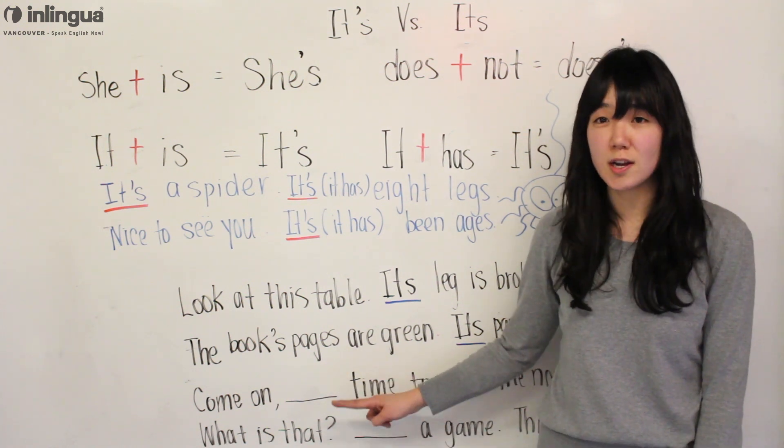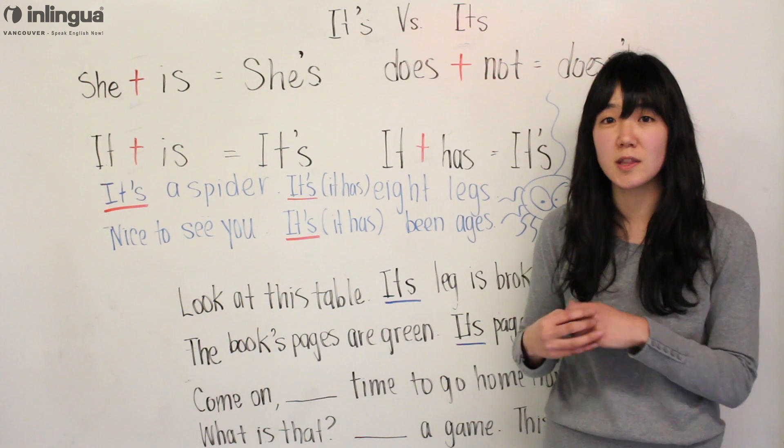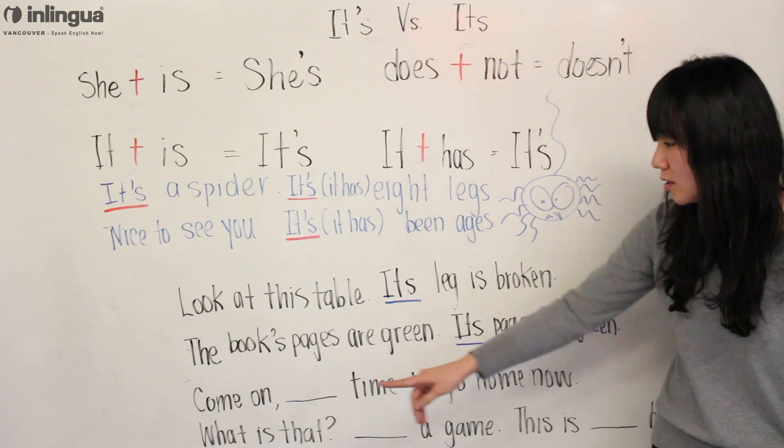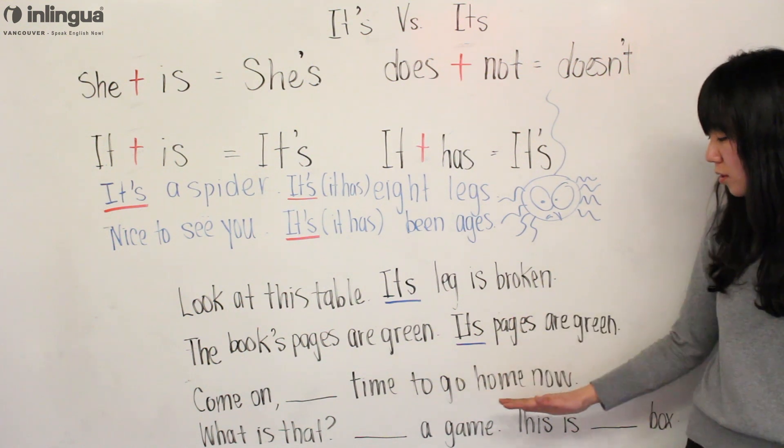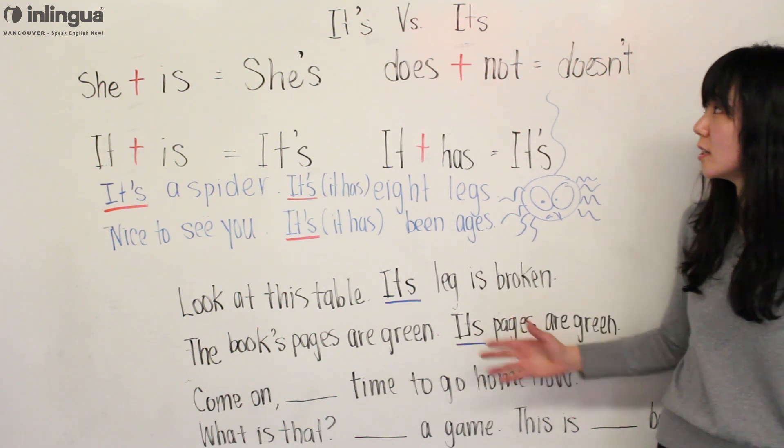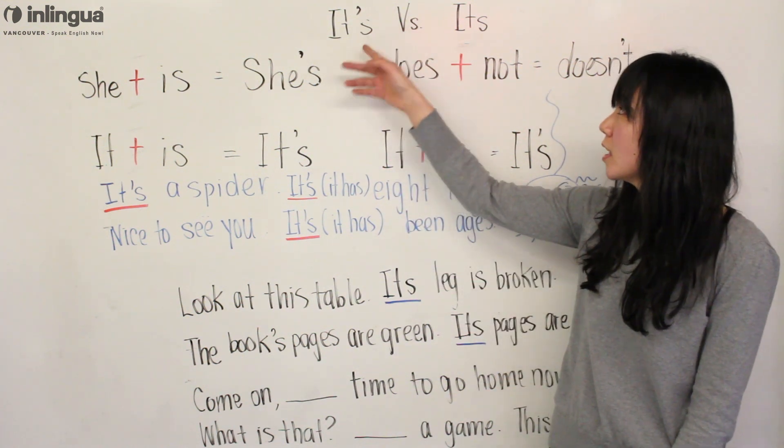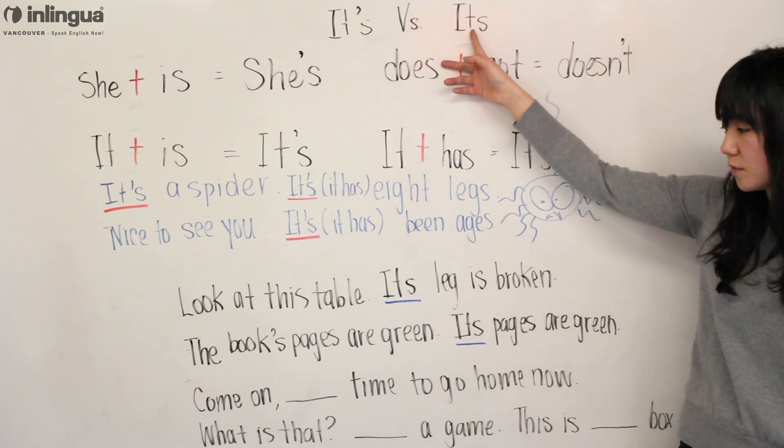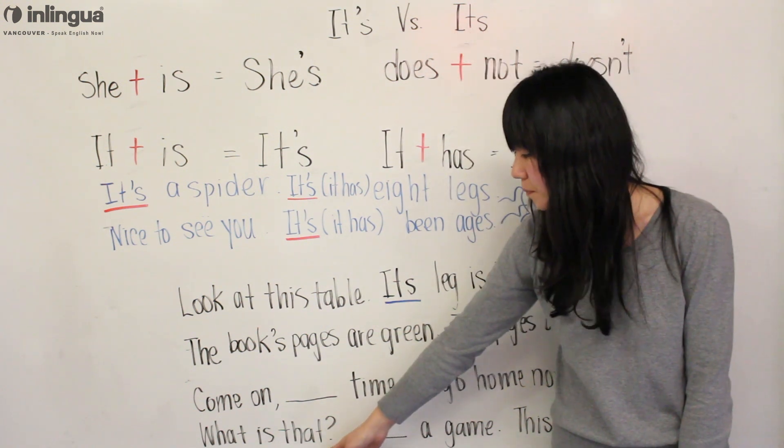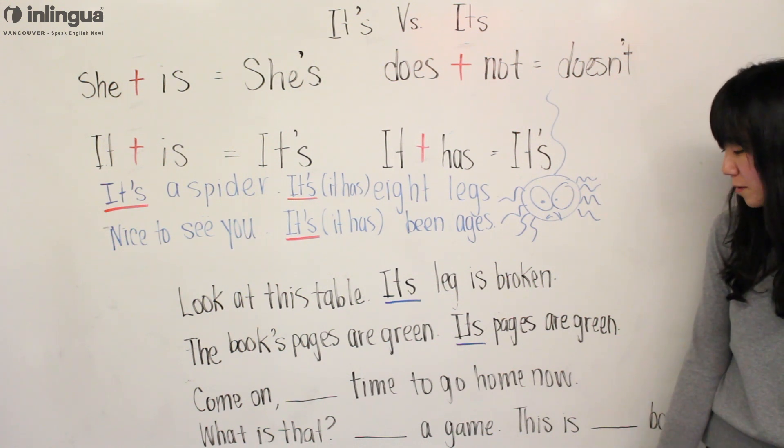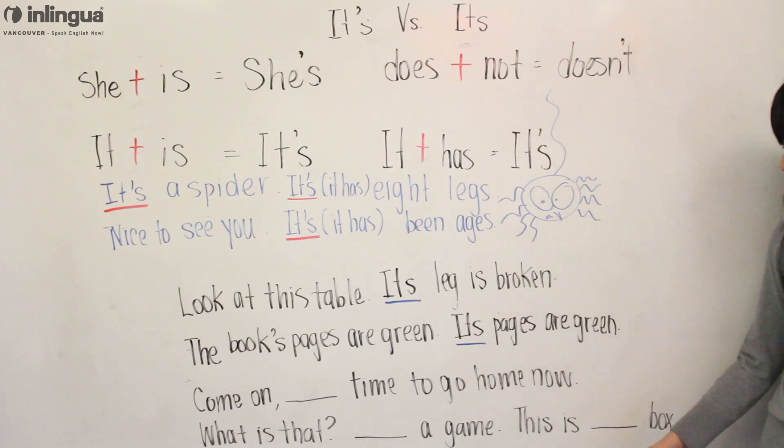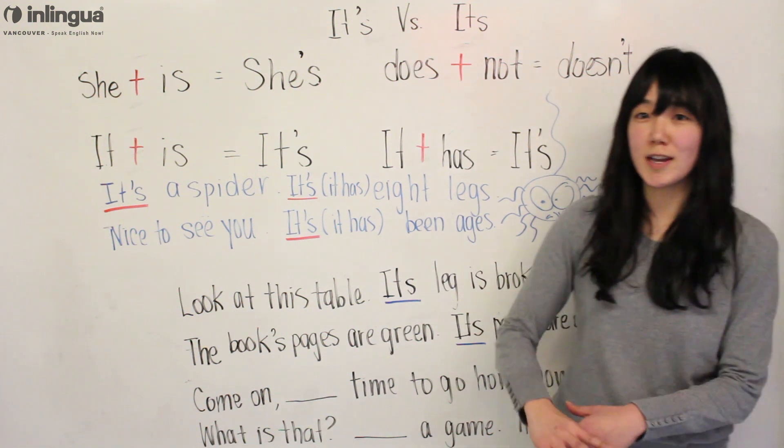These examples are for you to try at home and then you can write them in the comment box below. So here it is: 'Come on, ___ time to go home now.' So which one is it? Is it IT apostrophe S or is it ITS the possessive? Then there's another one here: 'What is that? ___ a game. This is ___ box.'